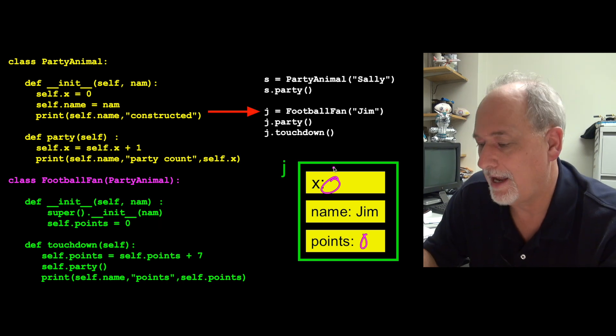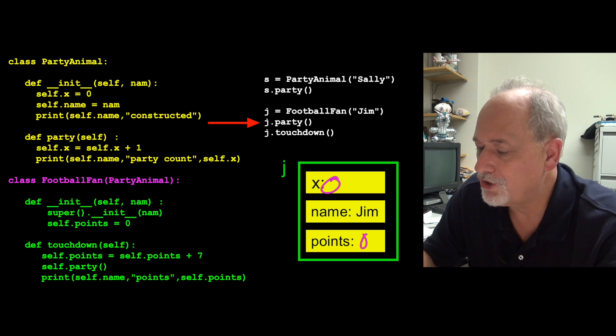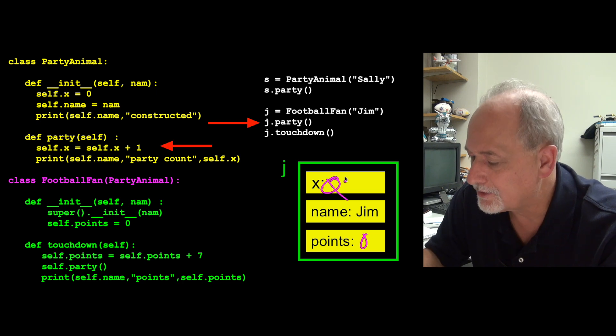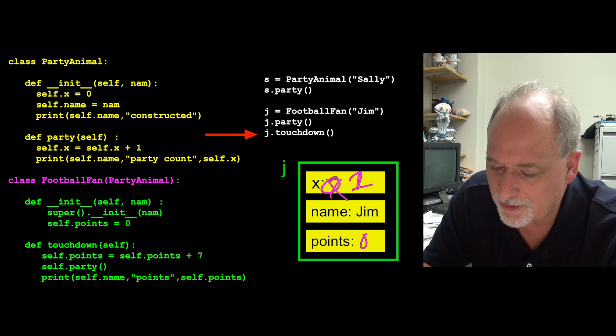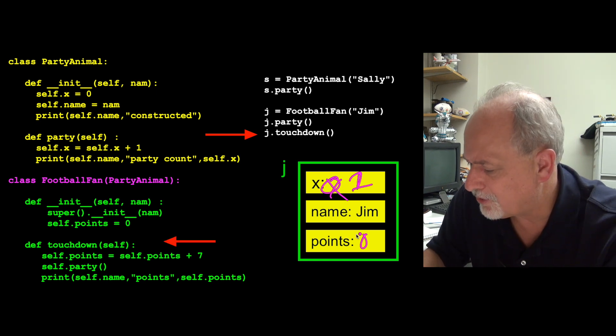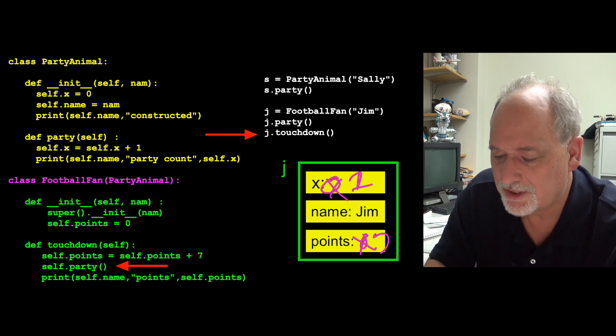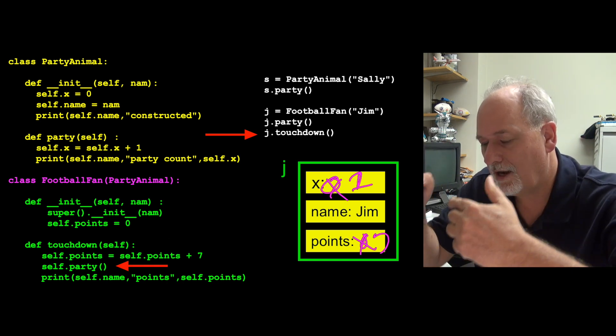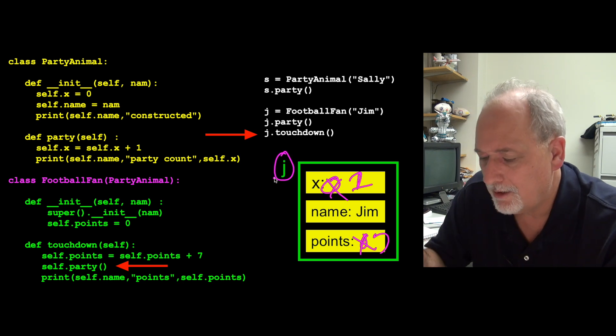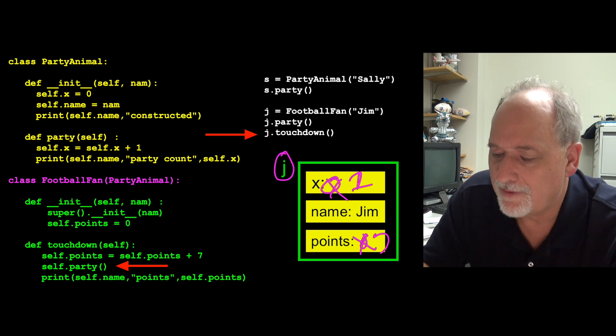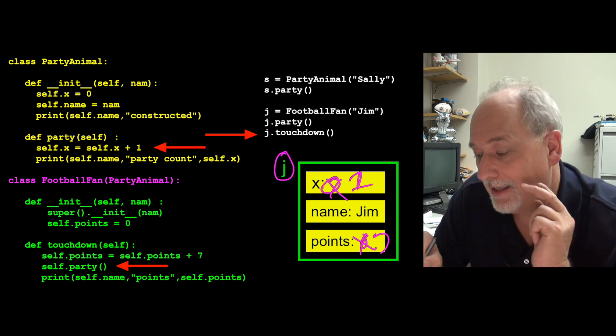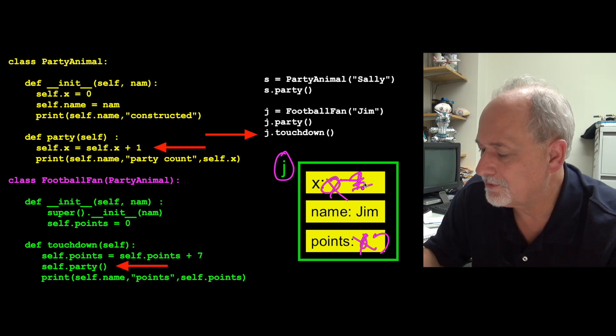And so we can call the j.party. And if we call j.party, that goes here and adds one to x. So that adds one to x. And then we call j.touchdown. Well, that comes down in here and adds seven to the points. And then calls party within us. And so self.party is the current object, i.e. self and j are the same thing, right? Self.party. And then it goes up here and passes self in and it adds one to the x. In this case of this j variable. So this becomes two.